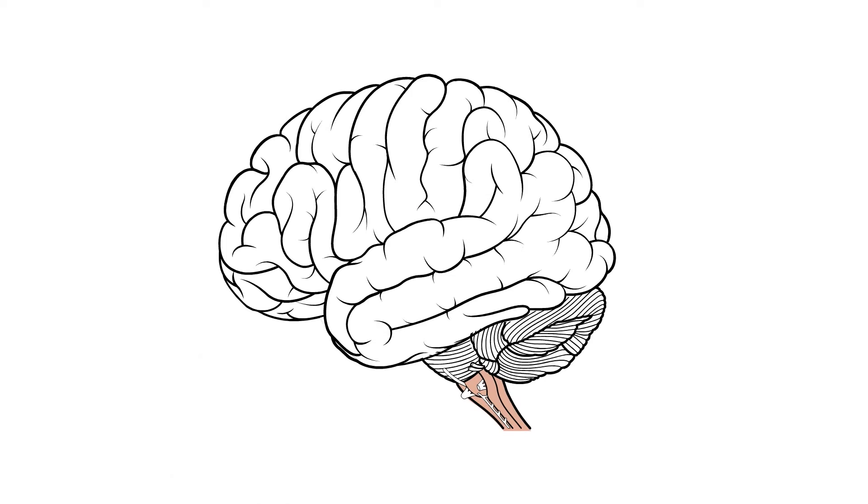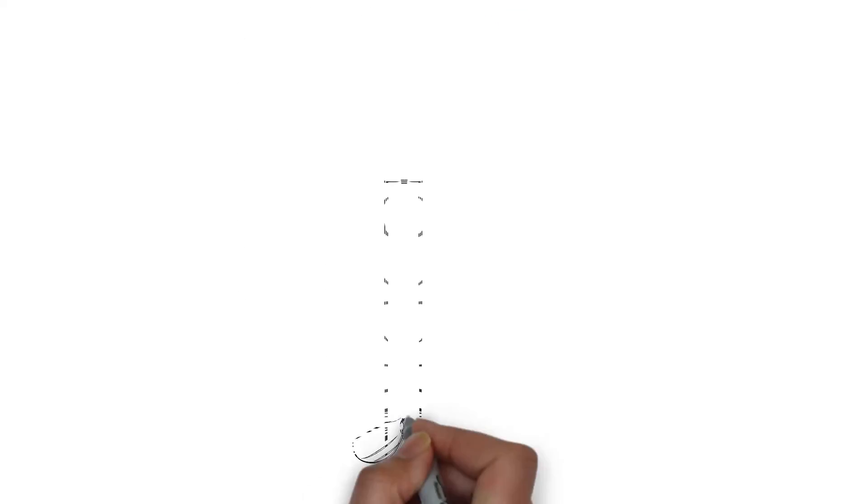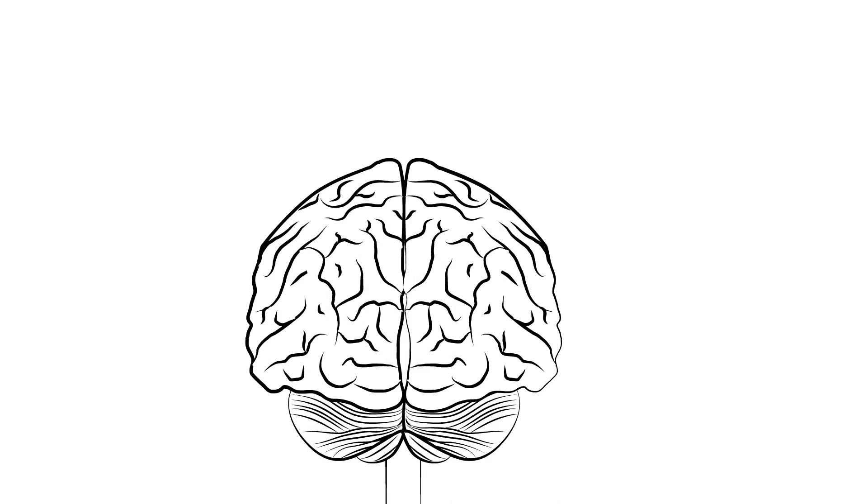Taking first the external structure of the brain, this outer layer is known as the cerebral cortex. As you can see the brain is divided into two halves and has a folded appearance.